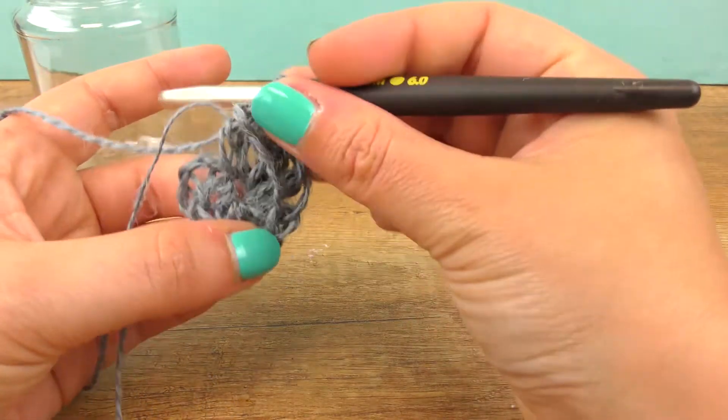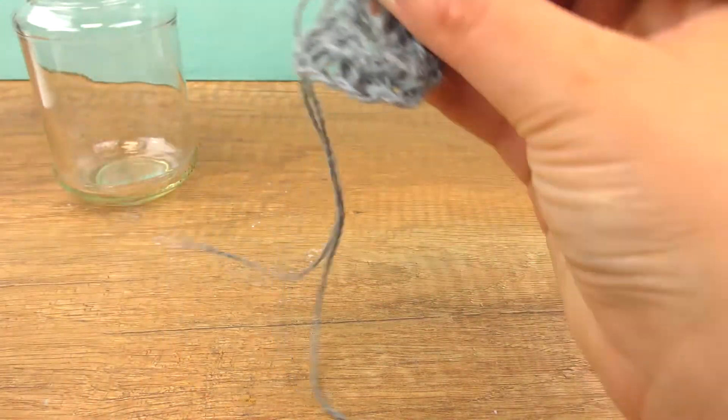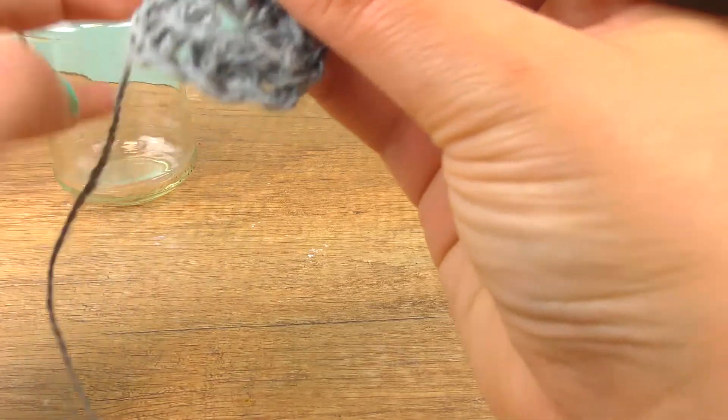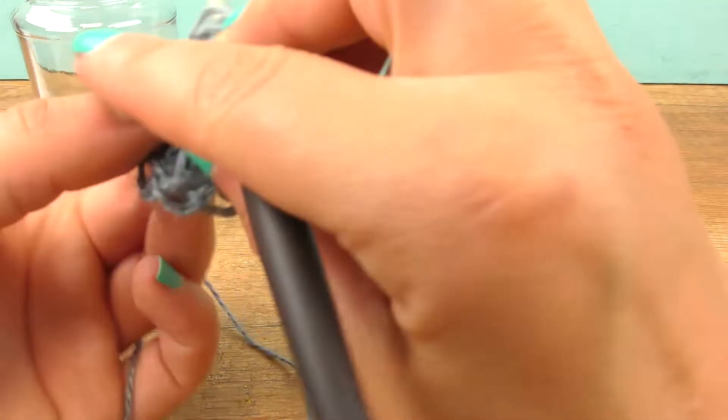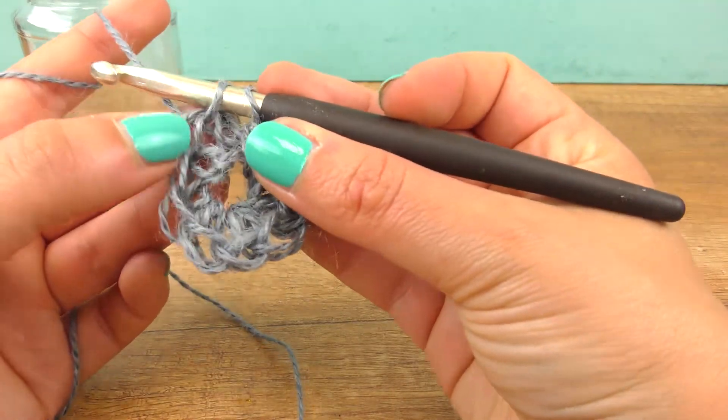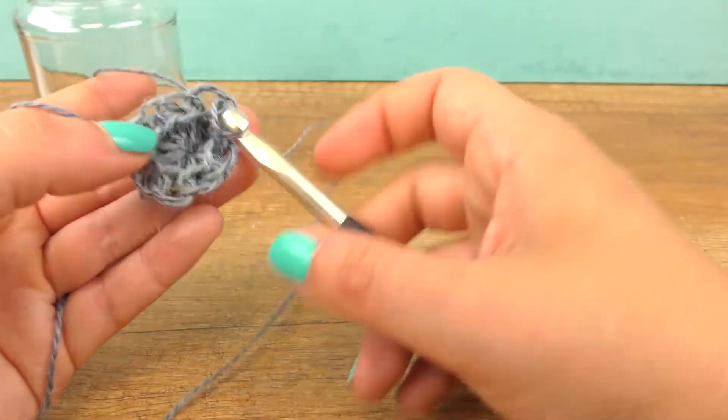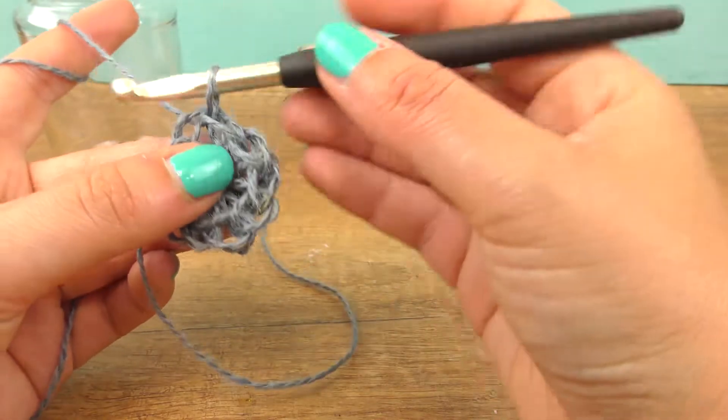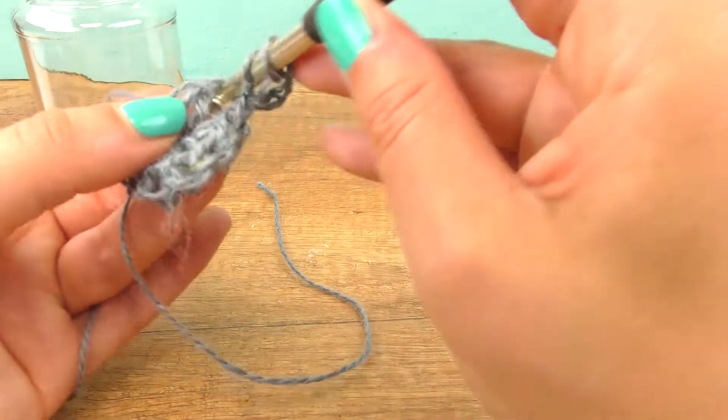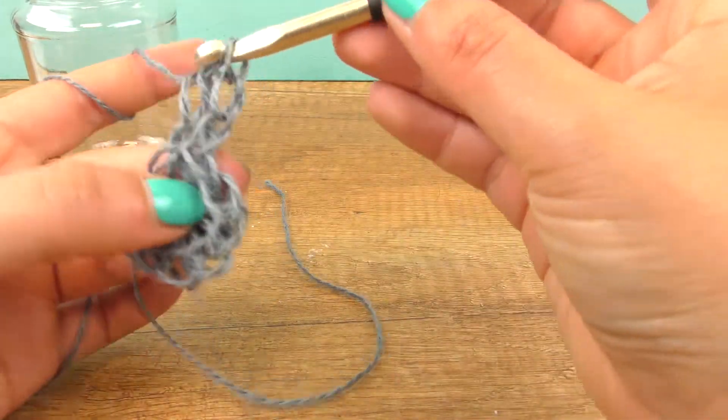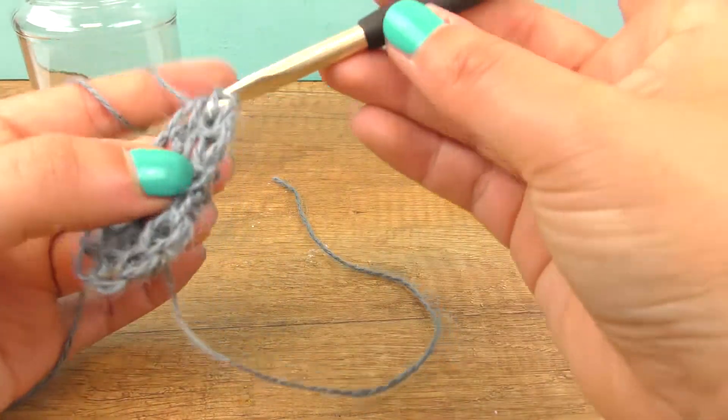Nine and ten. Now pull tight, knot the needle, put that back, and we have now our base. So we need to close this up with a slip stitch.